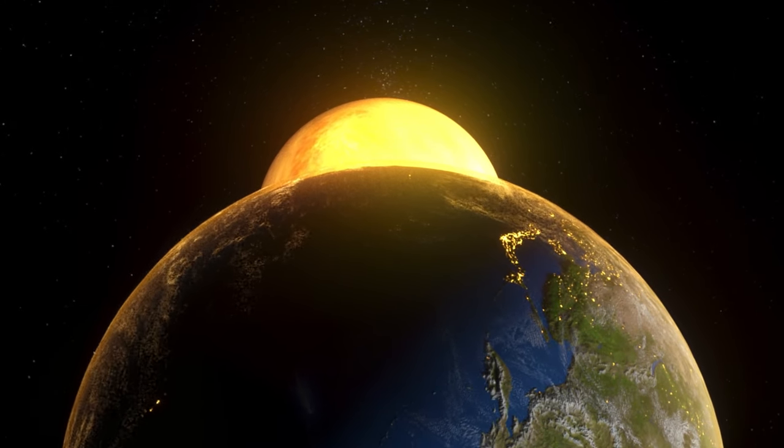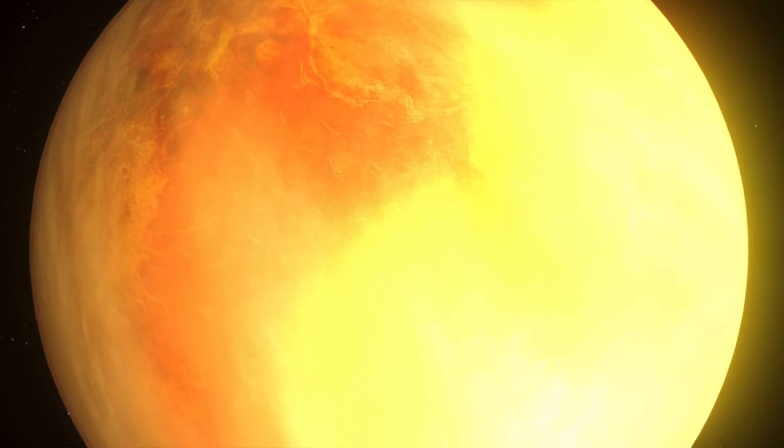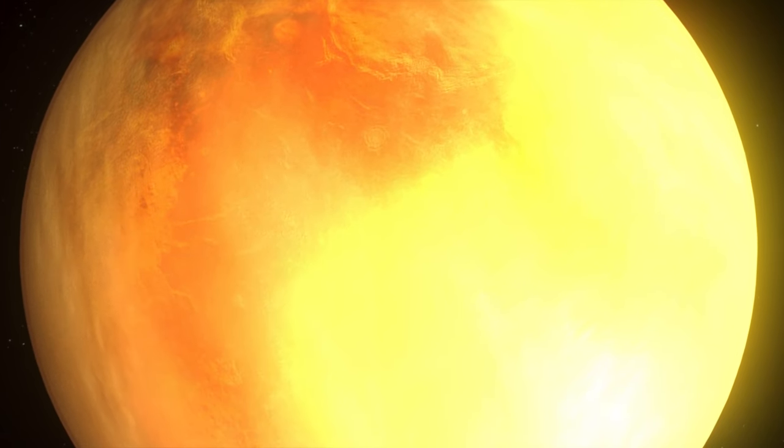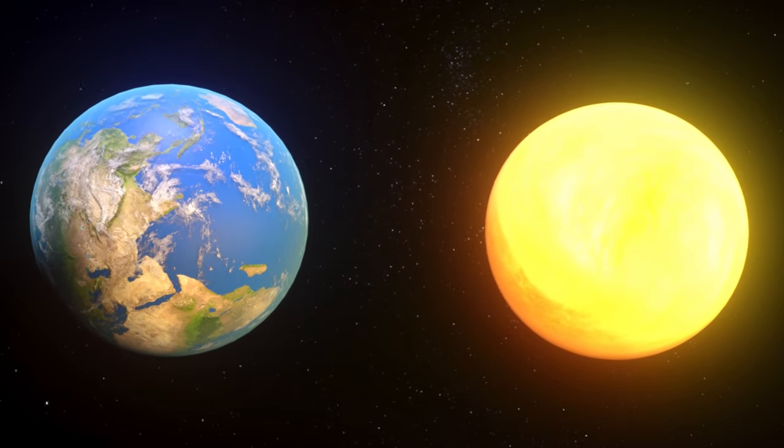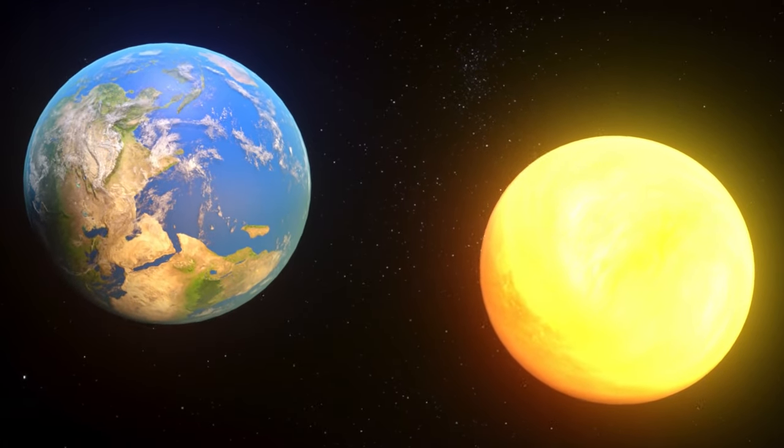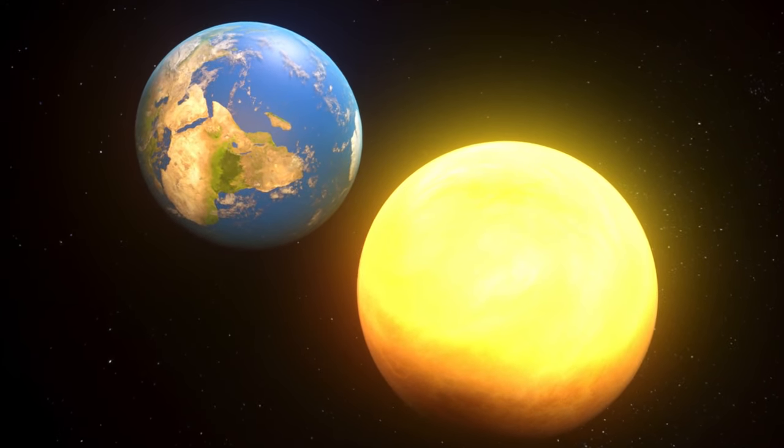If you looked at Venus, you'd spot vague, swirling patterns in the planet's yellowish-white cloud cover. Venus wouldn't become Earth's satellite. The two planets would likely orbit around their common center of mass, and this orbit would be quite eccentric, like me.